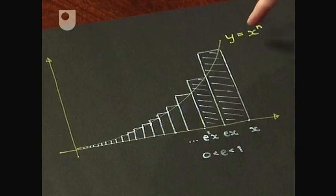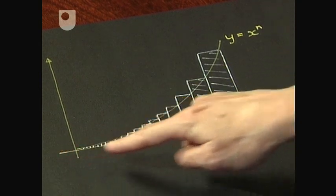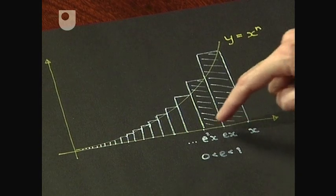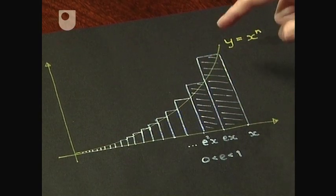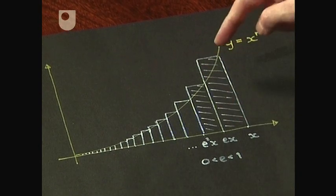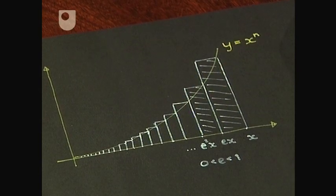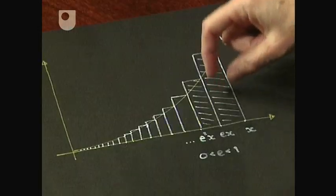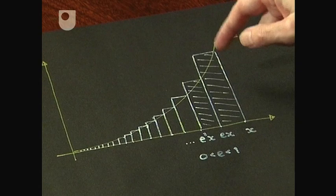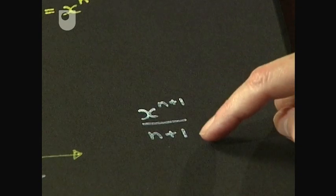Fermat also developed a remarkable method of calculating the area under the curve y equal x to the n. He was dividing the x-axis by a certain number of points x, ex, e squared x and so on, with e being less than 1. Then he constructs rectangles on these points and calculates their areas. The areas form an infinite geometric sequence, which Fermat was able to sum. Then he sets e equal to 1, so all these rectangles become infinitely thin, and the sum equals x to the n plus 1 over n plus 1.